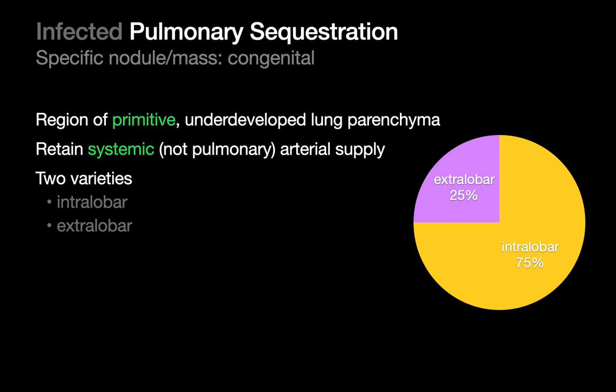Infected pulmonary sequestrations are another thing that can sometimes present specifically as a mass in the lung. To recap, pulmonary sequestration is basically a primitive area of lung parenchyma that hasn't undergone full differentiation during embryogenesis. This area of lung will look a little unusual — oftentimes kind of bubbly, almost like a dish sponge.